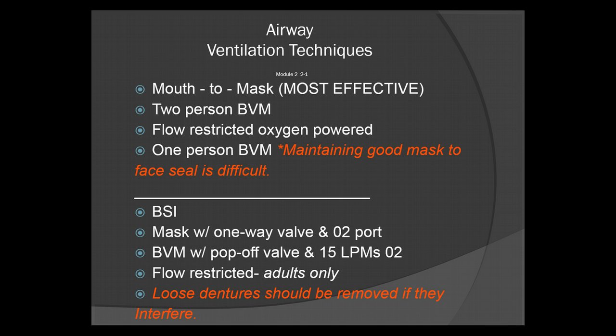In any of these techniques, always make sure that proper BSI is maintained. Your mask needs a one-way valve and an O2 port. The BVM needs a pop-off valve and 15 liters per minute O2 connection — otherwise, the BVM is absolutely useless. Always be sure you have the high-flow O2 hooked up to it. The flow restriction should only be used on adults. For any airway issues, loose dentures should be removed, as they could cause interference. If your patient is known to have dentures, it's probably best to remove those as soon as you note any airway issues.